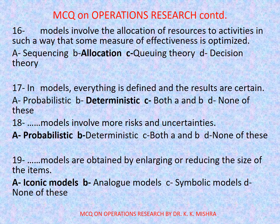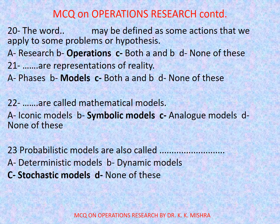Question number 19: Dash models are obtained by enlarging or reducing the size of the items — options are: A. Iconic models, B. Analog models, C. Symbolic models, D. None of these. Correct option is A: Iconic models. Now move to next slide. Question number 20: The word dash may be defined as some action that we apply to some problems or hypothesis — options are: A. Research, B. Operations, C. Both A and B, D. None of these. Correct option is B: Operations.